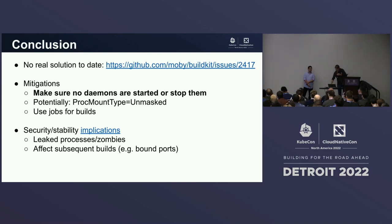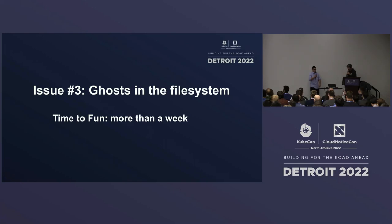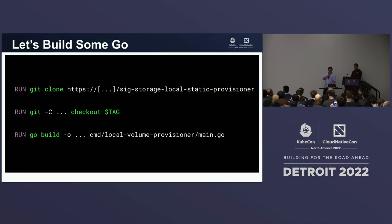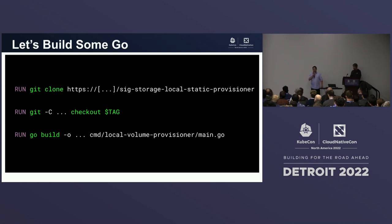This gets us to the third and last issue, which is the most complex one. Our last talk at KubeCon was 'Ghosts in the Runtime' — we like ghosts, so this time it's 'Ghosts in the File System.' We're just going to build a Go program — the local volume provisioner. Fairly straightforward: we clone the repository, check out a specific tag, and run Go build. What could possibly go wrong?